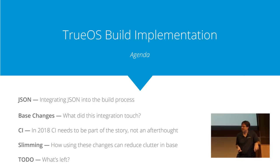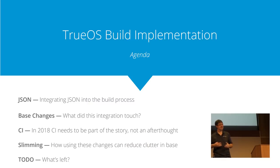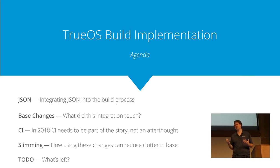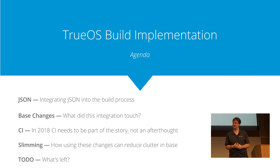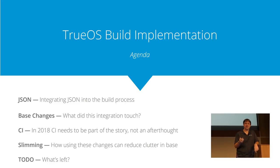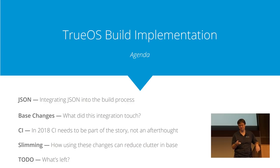What we're going to cover today: we're going to look at some JSON — a manifest we use to control our entire build process. We're going to go through some of the base changes we put into FreeBSD to incorporate this. Continuous integration — we use a lot of Jenkins. We're going to talk about that, and how we can try to slim the base down, because most of our builders end up cutting things out of base after they build.